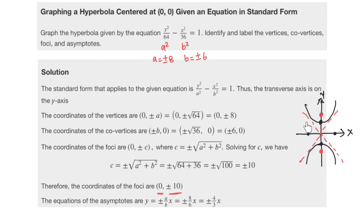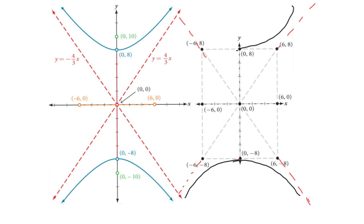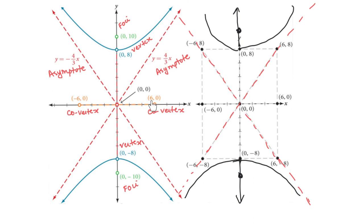To graph the hyperbola, start from the center (0, 0), mark the vertices and co-vertices, then extend those to form a box. Draw the diagonals of the box and extend them — those form the asymptotes. Then draw the hyperbola opening upward and downward through the vertices, staying close to the asymptotes. Mark the foci inside the curve, always using dashed lines to represent the asymptotes. Label the vertices, co-vertices, foci, and the equation of each asymptote.